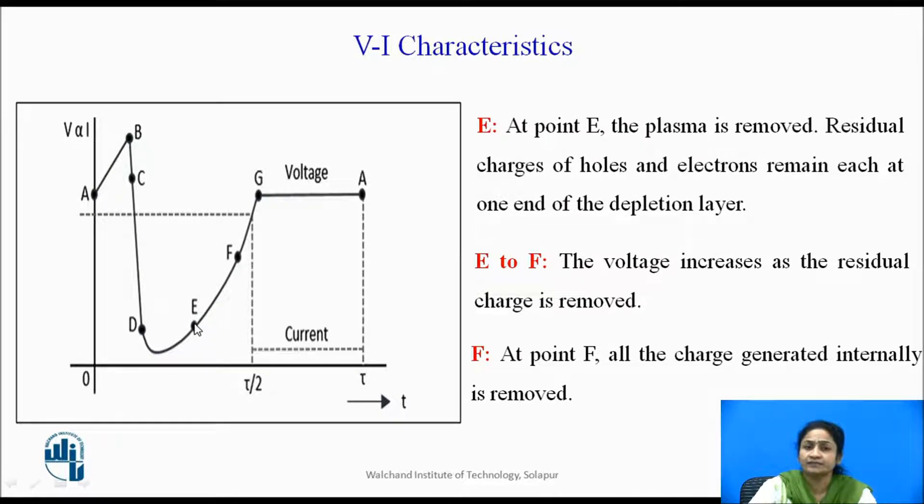At point E, the plasma has been removed, but there are few residual charges of holes and electrons remaining at one end of the depletion layer. So to completely remove this, it takes some time duration, that is from E to F. From E to F, the voltage again starts increasing as the residual charges are removed.